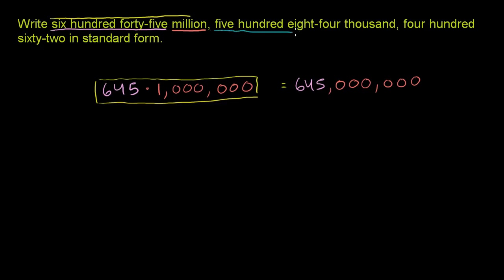We have 584. Let me write that down. 500 and actually, let me write it like this. We have, well, I'll write it like this. 584,000. So let me write the thousand. So 584,000. So it's 584 times 1,000.